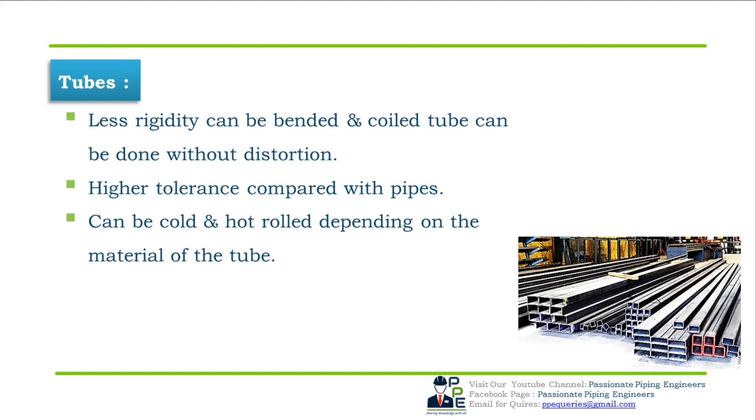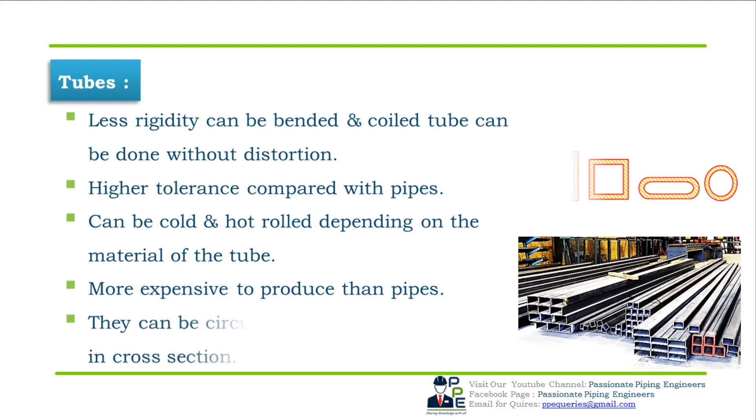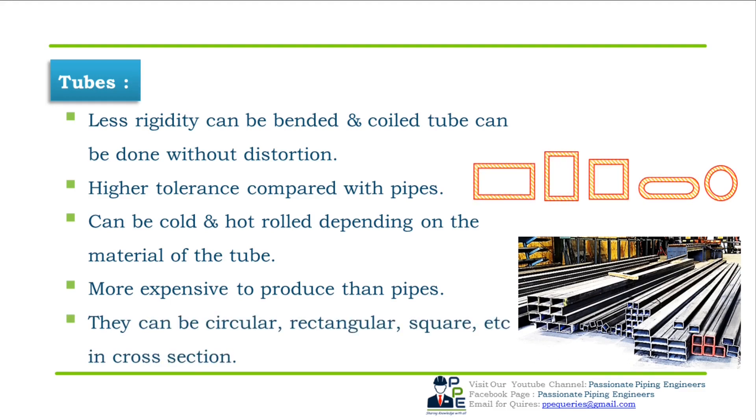Tubes are more expensive to produce than pipes. They are available not only in circular but also in square, rectangular, oval, and elliptical cross-sections.